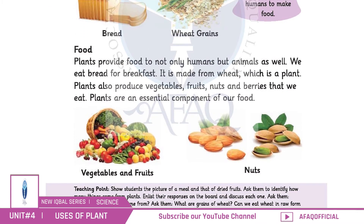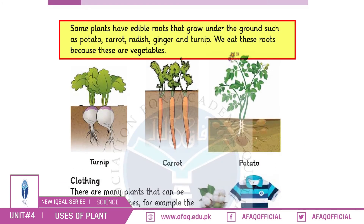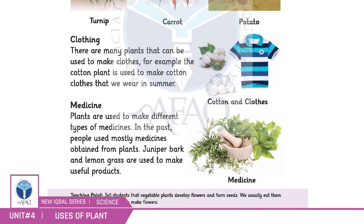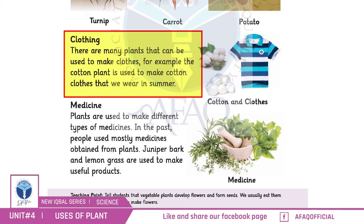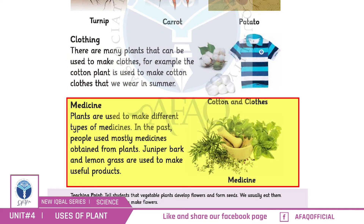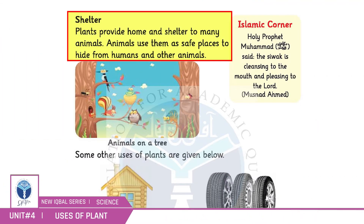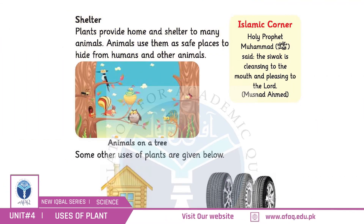Plants give us food. Some have edible roots, some are used for clothing — like cotton — and some are used for medicines, like juniper bark and lemongrass. Shelter is also provided; animals can live on the trees.